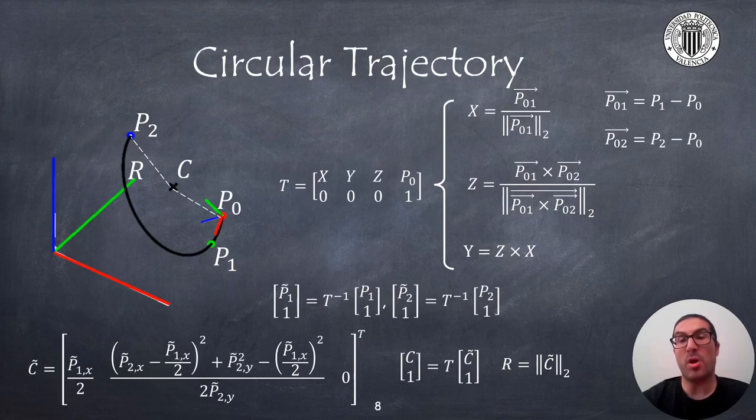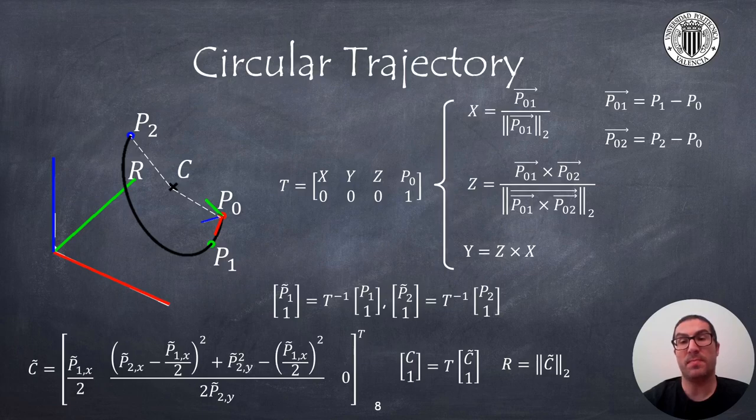Many industrial robots also allow circular movements from three-point positions. The first point of all these points, p0, represents actually the current position of the robot, while the other two points, p1 and p2, are given positions.